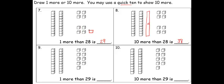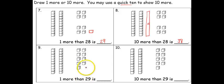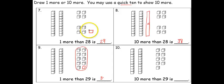In question nine, we are asked what is one more than twenty-nine. I have my two groups of ten and nine cubes. I'm going to add one more cube to that. When I add that one more cube, that gives me another group of ten. So now I have three groups of ten. That tells me that one more than twenty-nine is thirty.